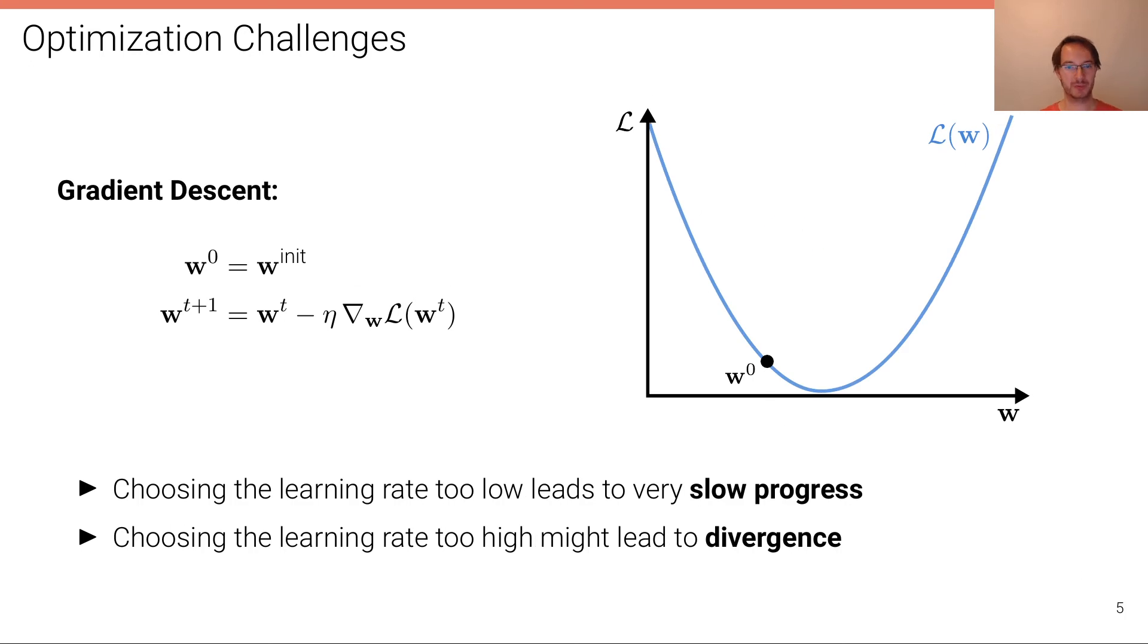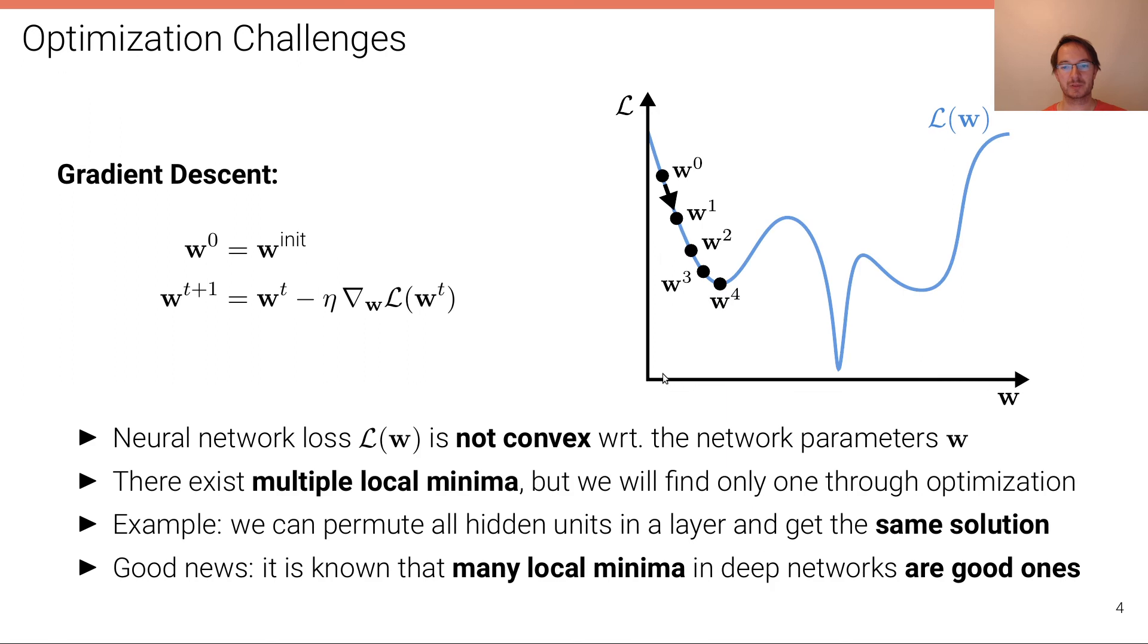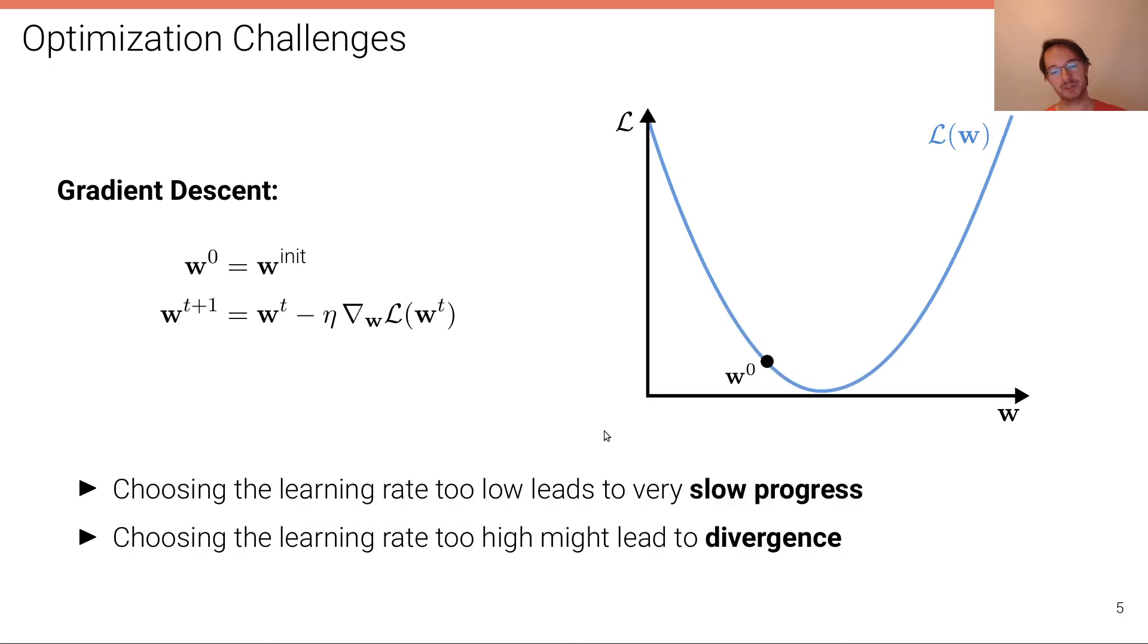We've already seen that local minima can be challenges. Another challenge is that we have to set the learning rate, the learning rate eta here. Depending on how we choose the learning rate, the progress can be very slow. If you choose the learning rate too low, then we reach the local minimum very slowly because the closer we come to the local minimum, the smaller the gradient is, the smaller the step sizes we're taking. So it takes very long towards the end.